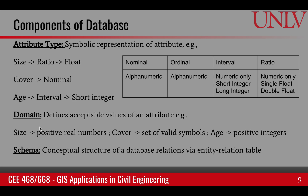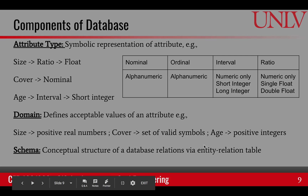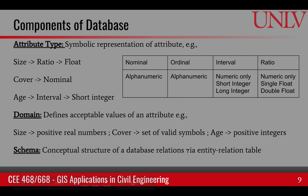The domain of an attribute defines the acceptable values of that attribute. For example, size is a ratio but cannot be negative — the domain for size is the set of all positive real numbers. For cover, the set of all valid symbols would be the domain. Age would have all positive integers as its domain. Lastly, the database schema is the conceptual structure of the database, also represented using an entity-relation table — basically it tells us how different tables are related to each other.